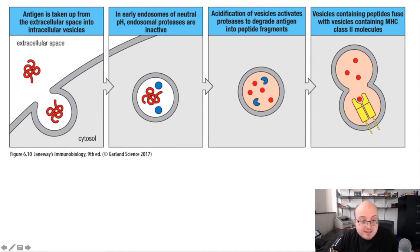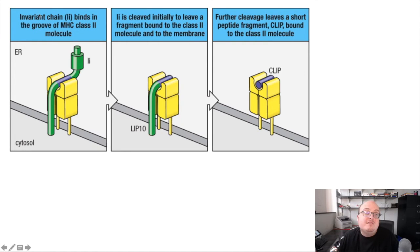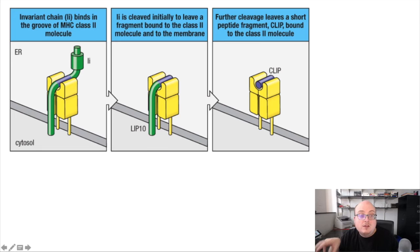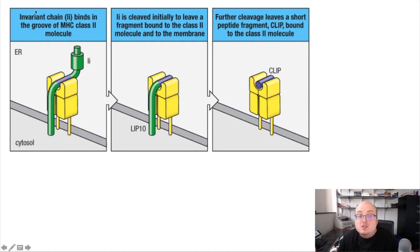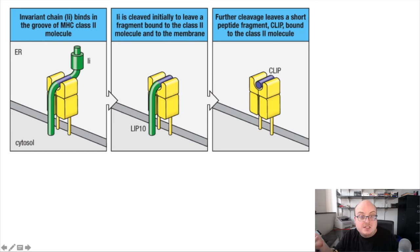Within the ER, there is a structure called the invariant chain. The invariant chain is made at the same time as the nascent MHC class II molecule. So the whole time that the MHC class II molecule is in the ER, it's bound — and in particular its peptide binding groove is blocked by this molecule called the invariant chain. This means that MHC class II is never available to bind any antigen as long as it's in the endoplasmic reticulum.